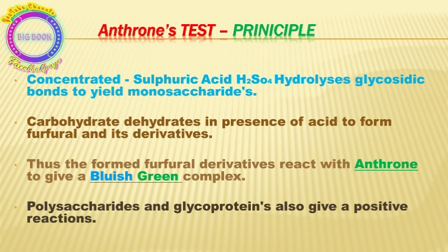The principle is that we use sulfuric acid to hydrolyze the glycosidic bonds to yield monosaccharides from the polysaccharides. The carbohydrate dehydrates in the presence of acid to form furfural, which is an aldehyde.